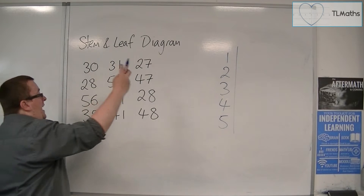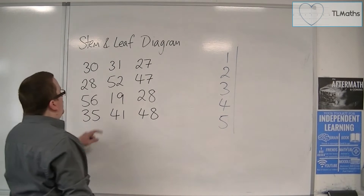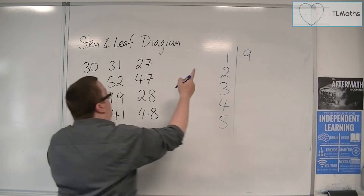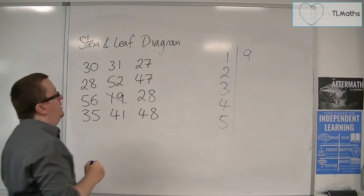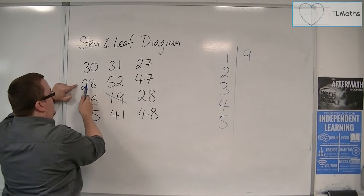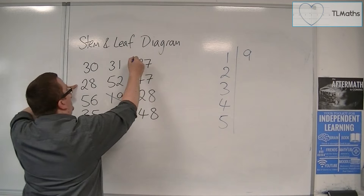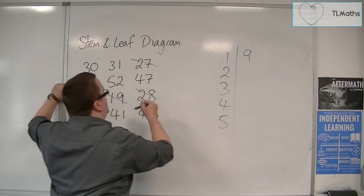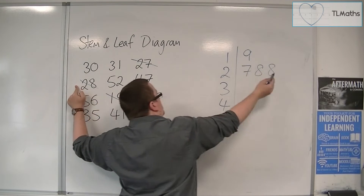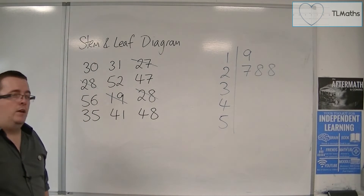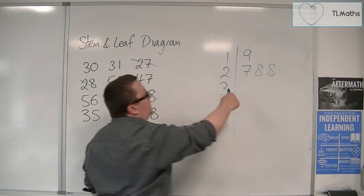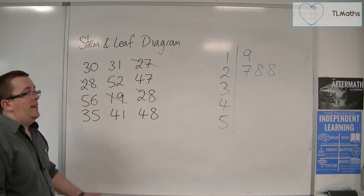For the tens, we've got 19 — that's the only one — so we represent that with 1 and 9. For the 20s, we have 27, 28, 28. We can write that by just writing the individual units, rather than writing 27, then 28, then 28 in full. It saves on space.